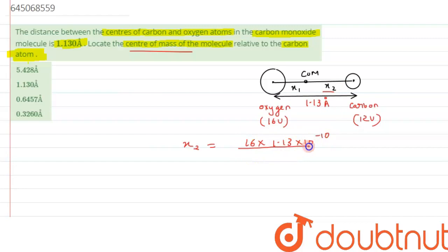So solving this value, we can get the value of x2. It comes out to be nearly 0.65 angstrom. So this is the value of x2 we are getting, that is center of mass from carbon atom, which matches with option C.